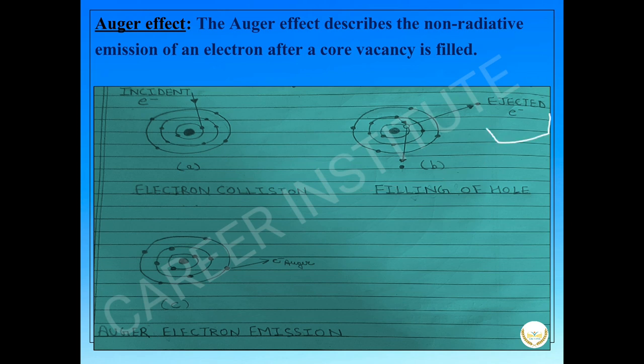This is the ejected core electron. This is the hole. This is the transmitted electron. After the ejection of the core electron, the hole is filled by a higher energy level electron. When this higher energy electron fills the hole, the electron releases energy. This released energy is absorbed by another nearby electron and causes its emission shown in Figure C. This ejected electron is called the Auger electron.